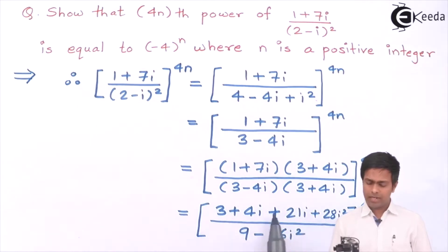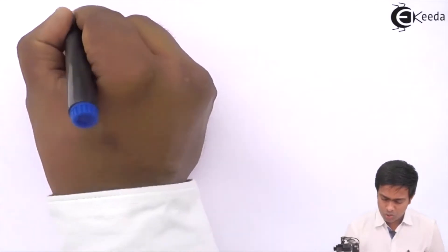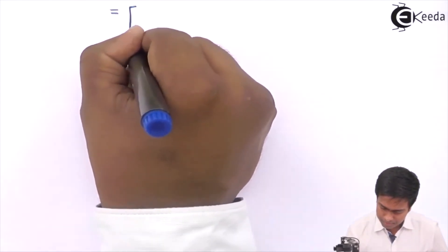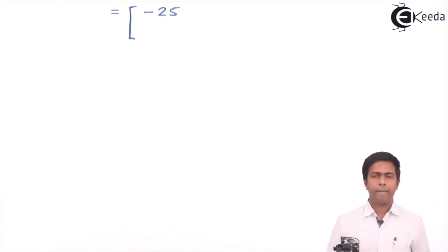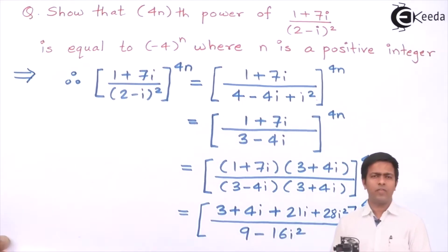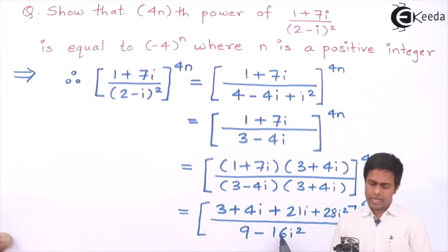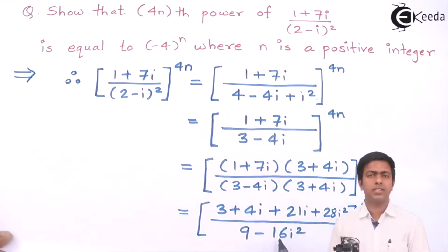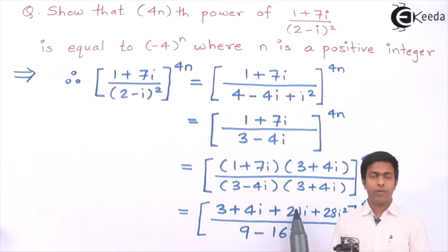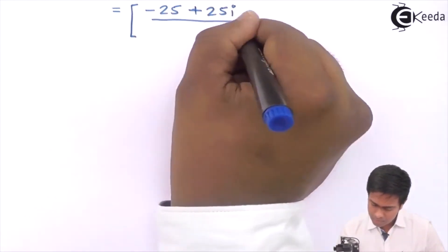Since i² = -1, the denominator becomes 9 - 16(-1) = 9 + 16 = 25. In the numerator, combining real parts: 3 - 28 = -25; combining imaginary parts: 4i + 21i = 25i. So the numerator is -25 + 25i and the denominator is 25.